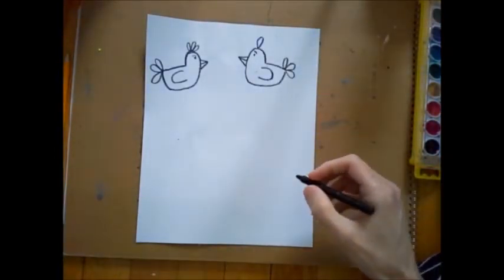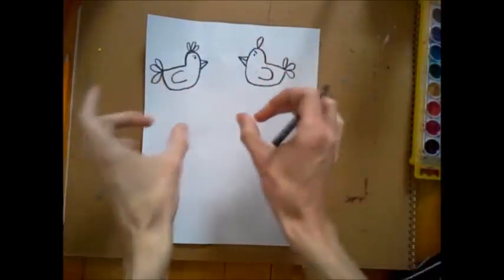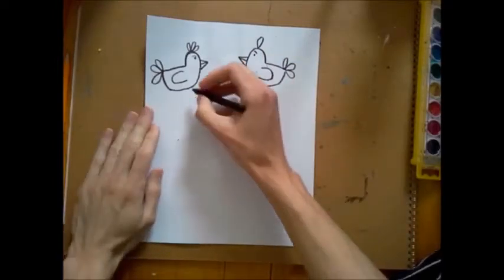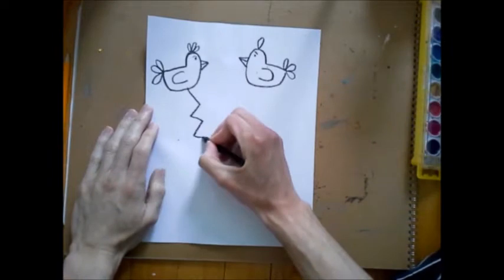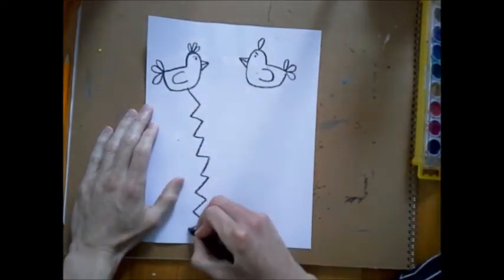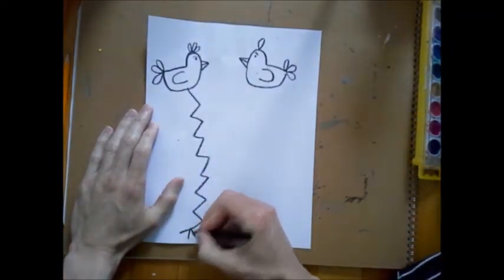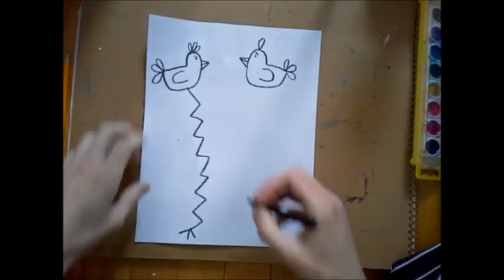And then next, you're going to make your very long, very thin legs. So maybe this bird is going to have like zig-zaggy legs. They're very long. And then I'm going to make one, two, three lines at the bottom for its toes.